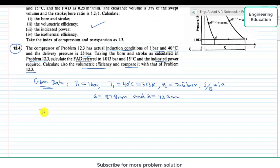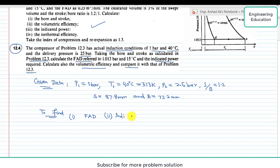We have to find three things: first, free air delivery (FAD); second, indicated power; and third, volumetric efficiency.